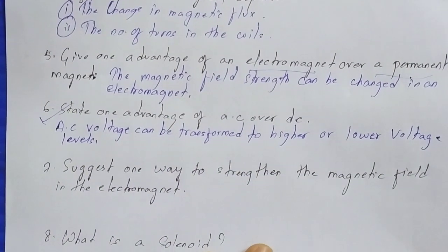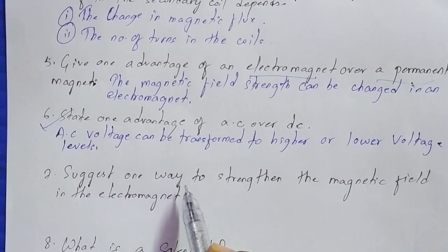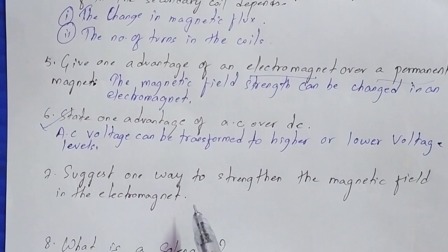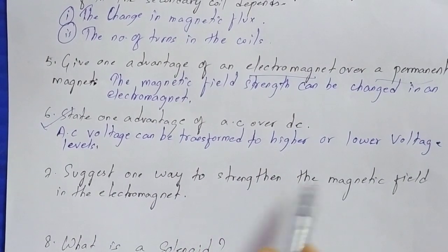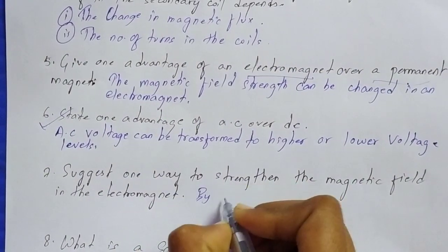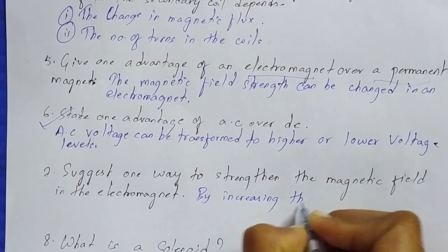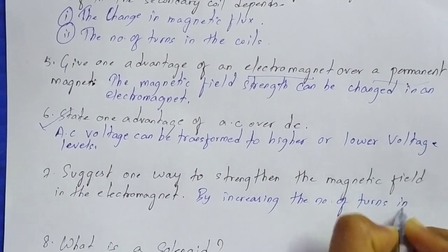Question number seven: state one way to strengthen the magnetic field in an electromagnet. You can increase the strength of the magnetic field in an electromagnet by increasing the number of turns in the coil.